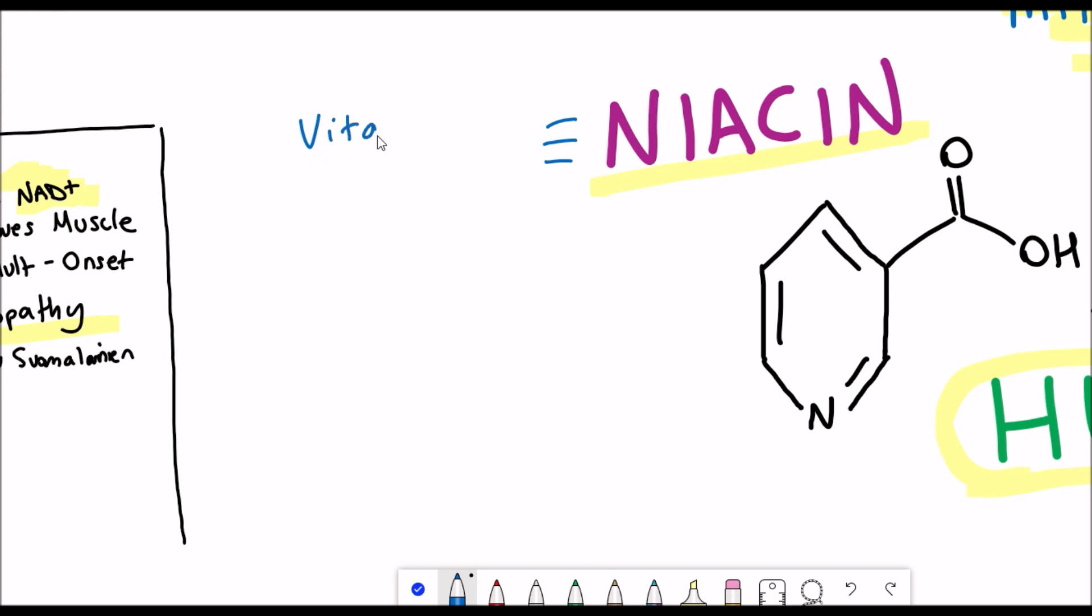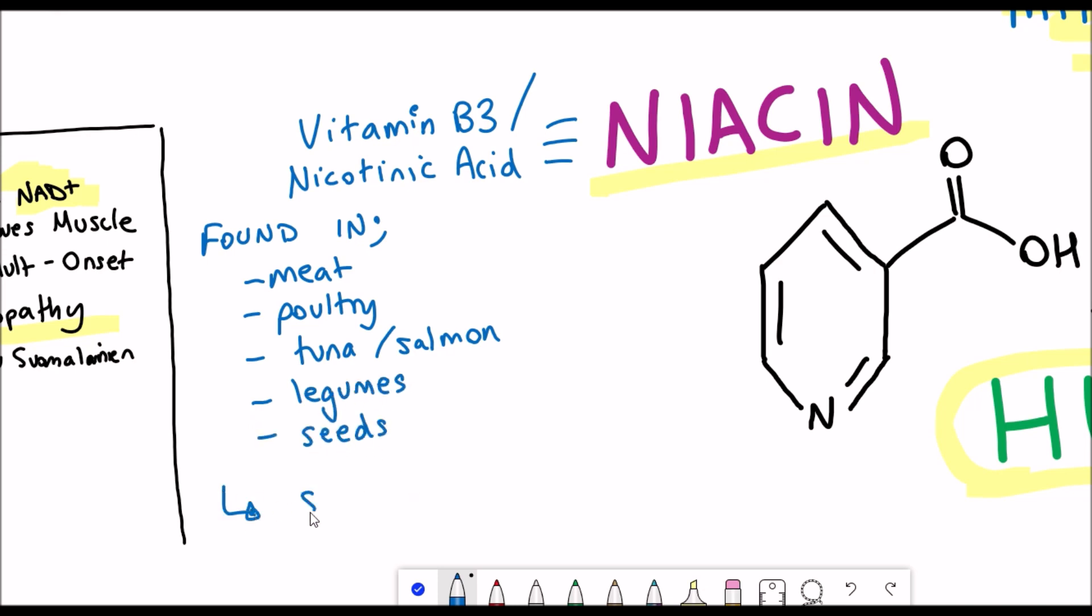So firstly let's talk about niacin because I've never spoken about it on this channel in any detail before. Niacin is also referred to as vitamin B3 or nicotinic acid and it can be found in lots of different food types such as meat, fish, legumes and seeds. Niacin can be taken as supplements.